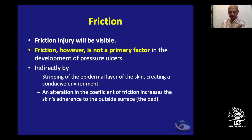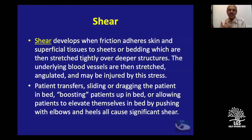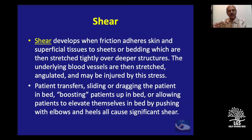Friction weakens the skin, causes mild abrasion visible on examination, and increases the coefficient of friction — so the rubber sheet sticks to the patient's back and sacral region, sometimes requiring peeling off. Shear, along with pressure, is the most important factor causing pressure necrosis. Shear develops when friction adheres the skin and superficial tissues to the sheets, which then stretch tightly over the deeper structures, and the underlying blood vessels are stretched, angulated, and injured.